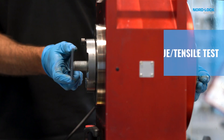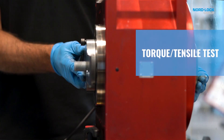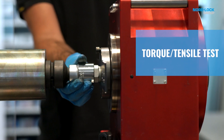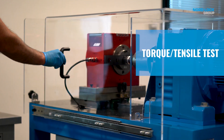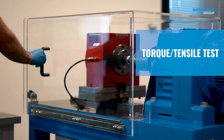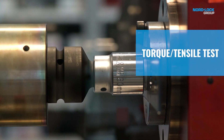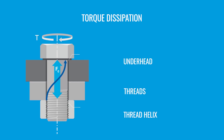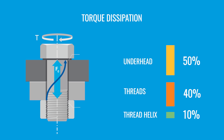Very few actually. Torque tensile tests permit to characterize the coefficients of friction taking place at both contact interfaces. The breakdown of torque shows that only 10% of the input torque is useful. All the rest is dissipated by friction. For instance, underhead torque represents 50% of the input torque and thread torque 40%. Hence, the torque tightening process has a very poor efficiency.